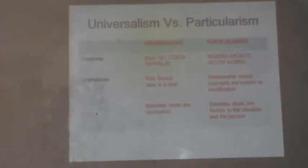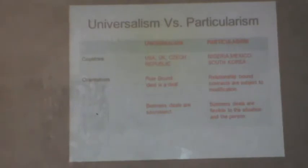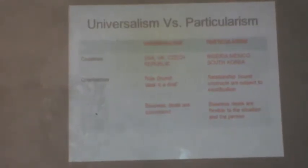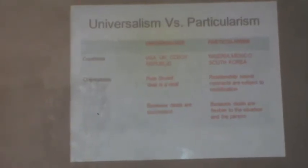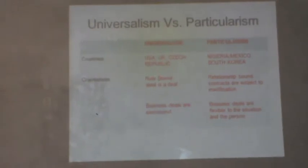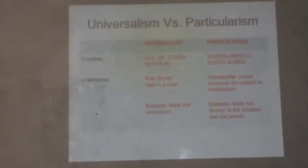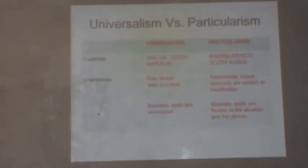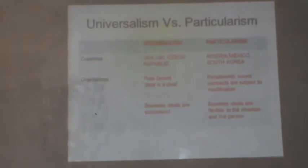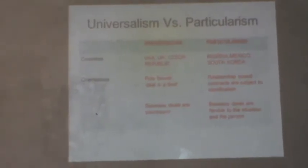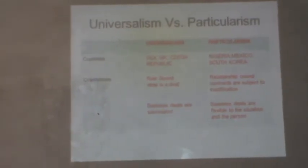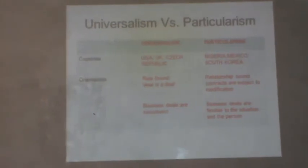The first dimension is universalism versus particularism. In universalism, business deals are sacrosanct — whatever deals have been made must remain the same with no possibility of flexibility. It is rule-bound; a deal is a deal. Countries include USA, UK, and Czech Republic. In particularism, contracts are subject to modification because these countries believe in building good relationships even in business, and are ready to be flexible for those relationships. Countries include Nigeria, Mexico, and South Korea.